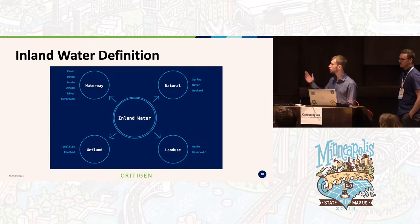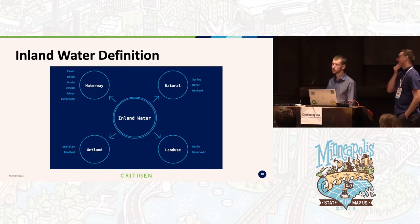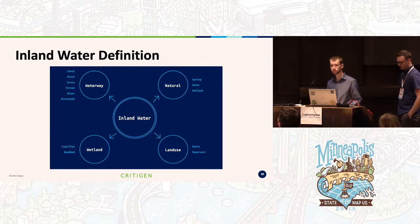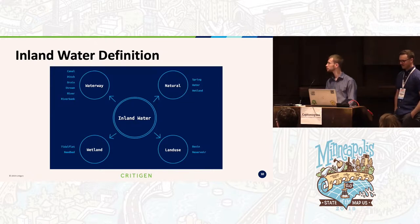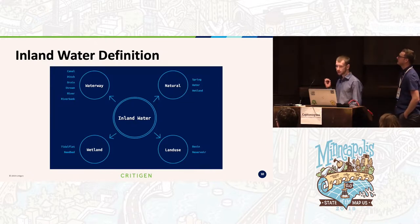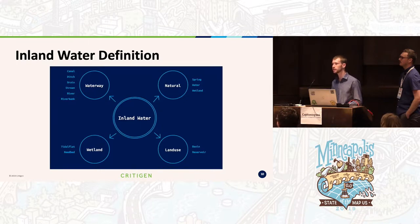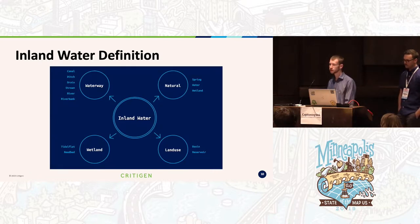We used four OSM tags — waterway, natural, landuse, and wetland — and a variety of values from each of those. We thought inland water was a good fit for our study, in that NHD being a drainage dataset very much fit with that. Being in Minnesota, there aren't a lot of oceans or seas, but many beautiful lakes and rivers. This is also a fairly self-explanatory definition: anything traversing over or surrounded by land, generally fresh water, with some exceptions like tide flats.